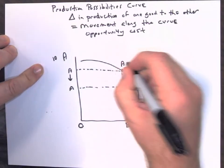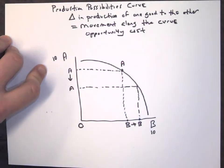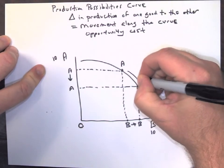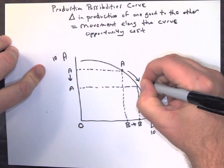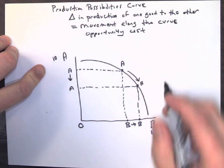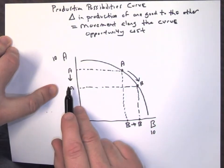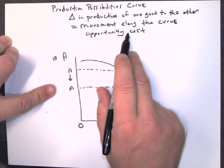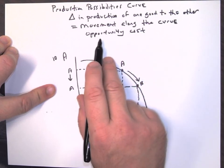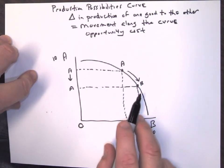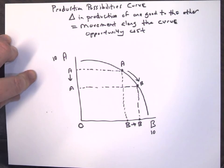We're producing right here at this much of item A and item B at point A on the curve. However, we decided we wanted some more of item B, so our opportunity cost is going to be we'll lose some of item A. This is what we call a movement along the curve, and that shows how opportunity cost is demonstrated on the production possibilities curve.